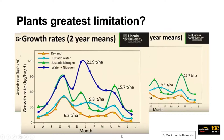We can get nitrogen from a number of different sources. Obviously bag nitrogen is one, and that's what we'll be talking about today. The other production system is through legumes in our pasture system. When we're talking about nitrogen, it can have really significant influences on our overall production. However, there are some rules and things we need to consider to make sure we're getting the greatest benefit from that nitrogen we apply.